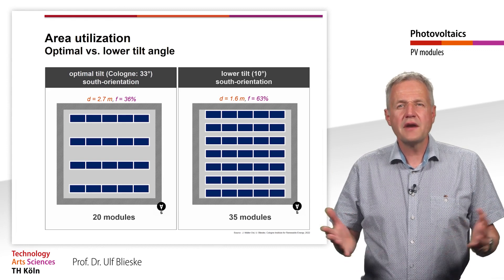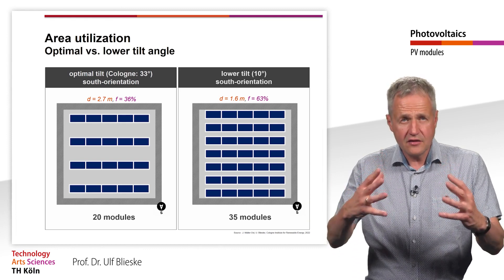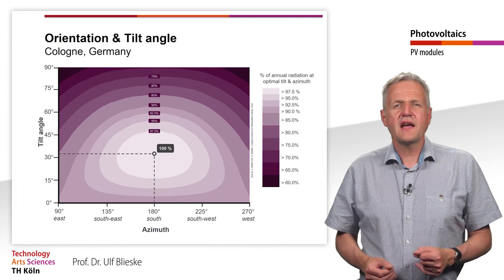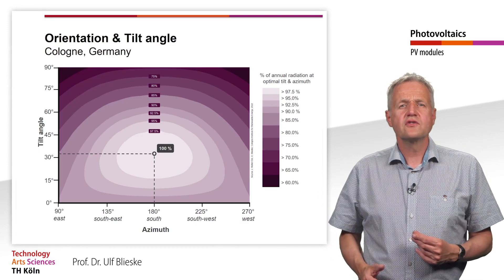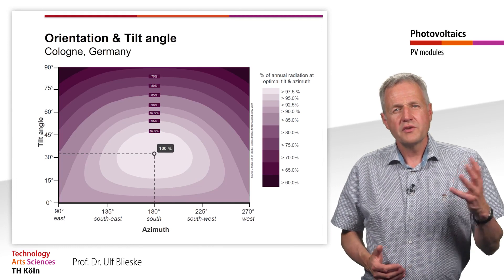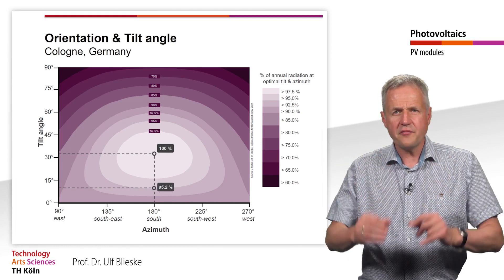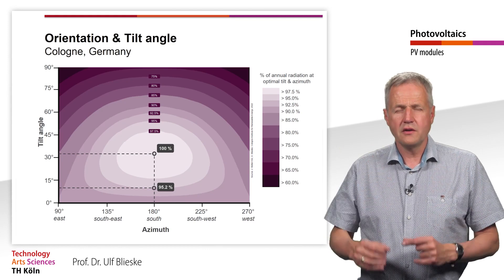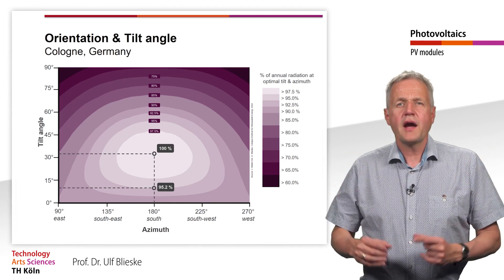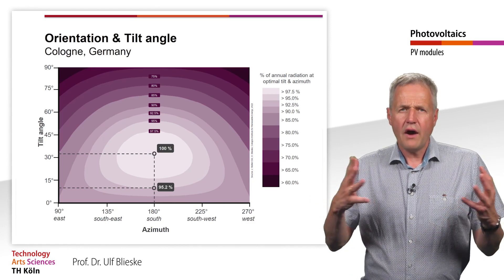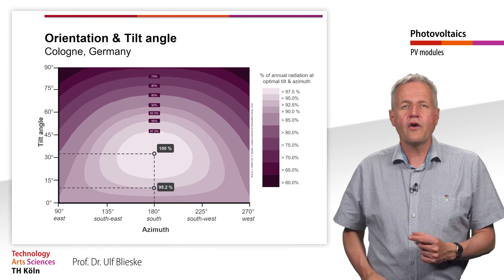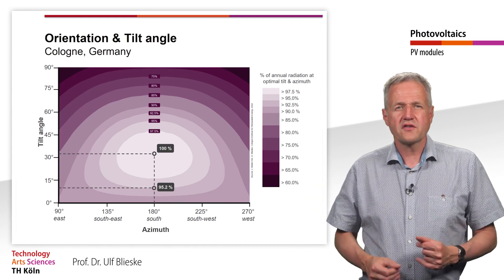In return, however, the annual irradiation and thus the energy yield of a single module decreases. To see how much the annual irradiation decreases due to the low tilt angle, we again look at the contour diagram. We see that the annual irradiation decreases by almost 5% compared to the optimal tilt angle. Accordingly, the annual energy yield of a module will also decrease by more or less 5%. However, the energy yield per square meter of available roof area is increased overall, since considerably more modules can be installed.